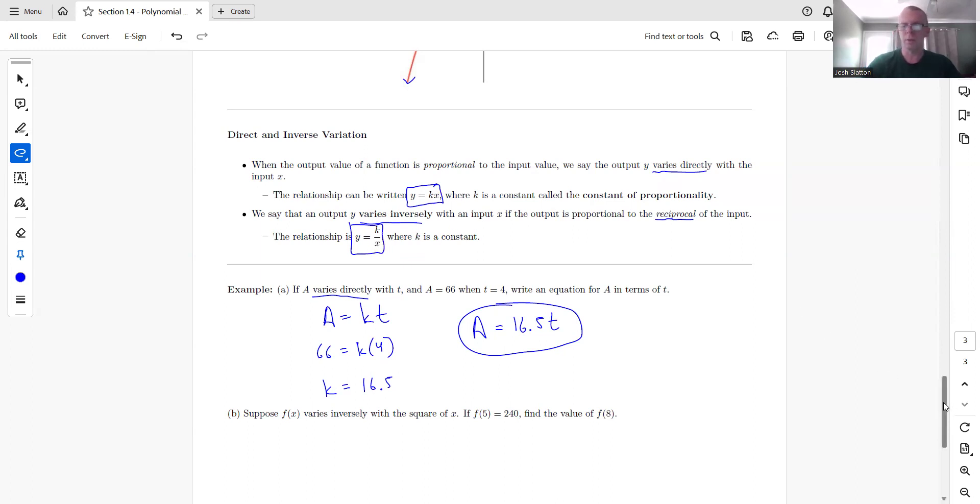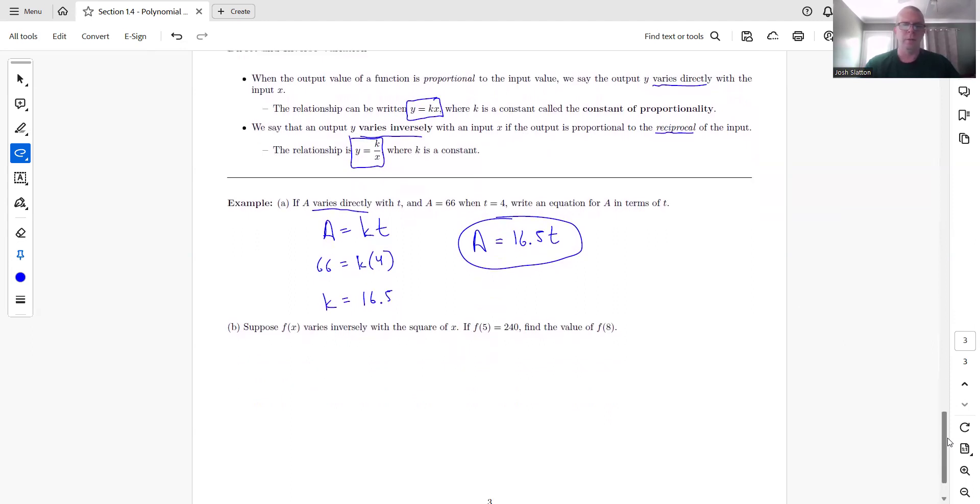So let's look at part B. Suppose F of X varies inversely with the square of X. And so all that means is F of X is K. It's inverse. So the X is in the denominator and it's the square of X, not just X.